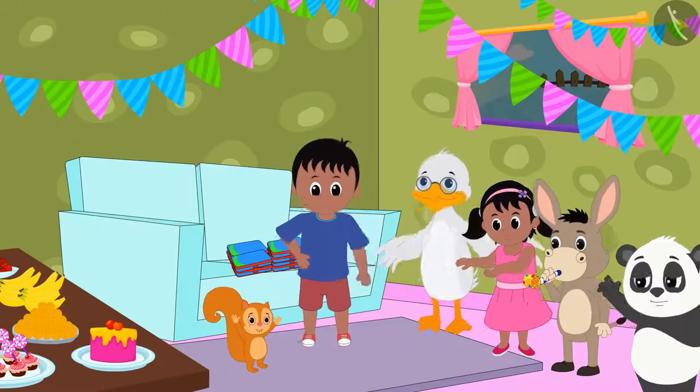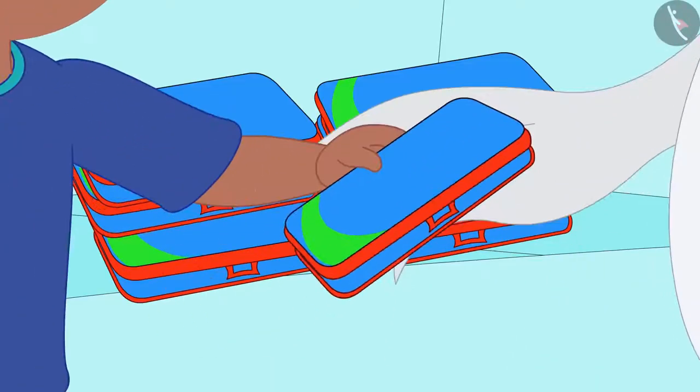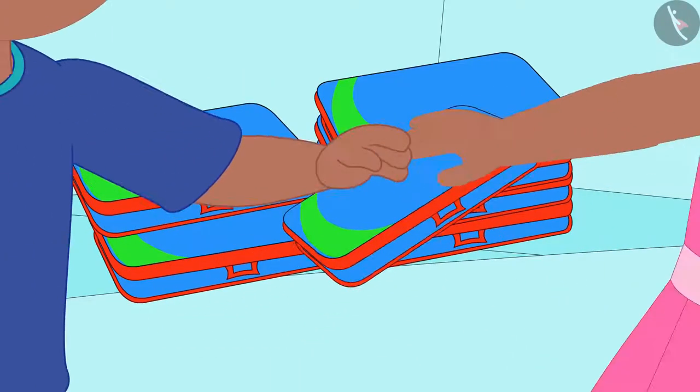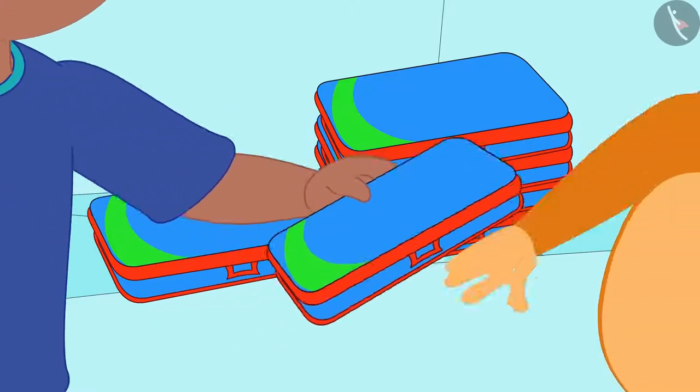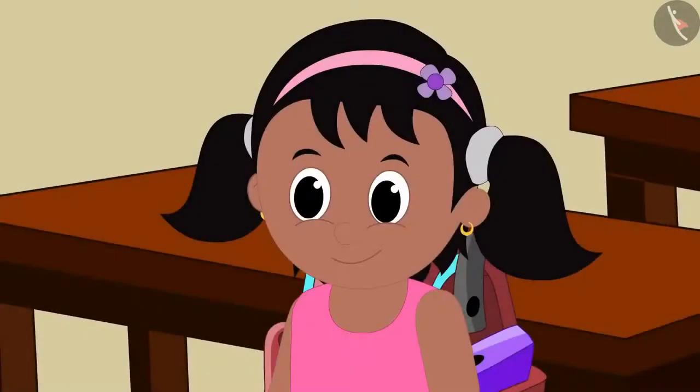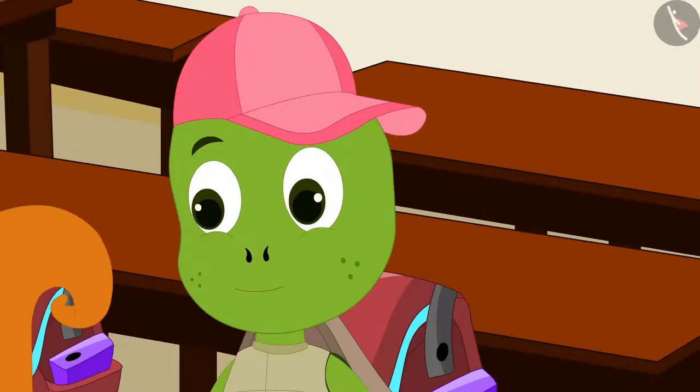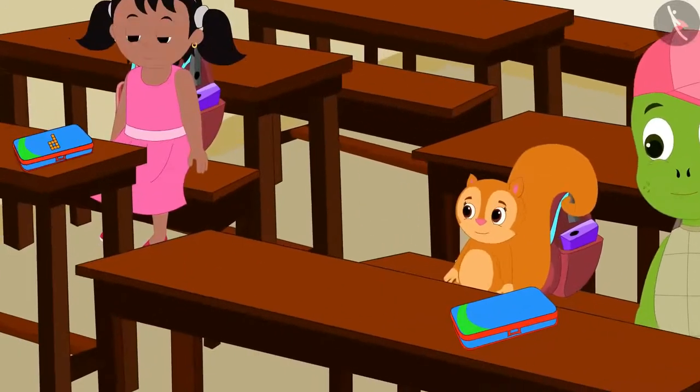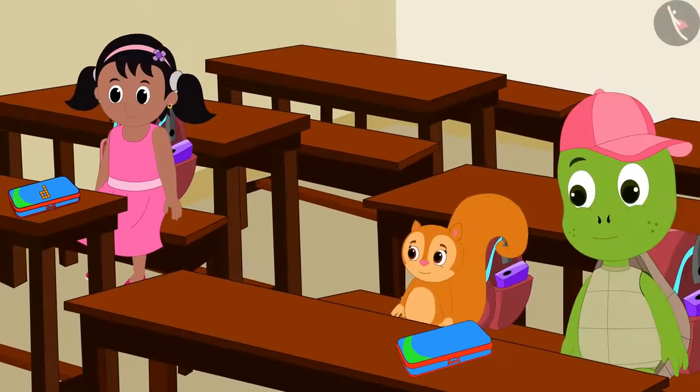At Raju's birthday party, Raju gave compass boxes of the same design to all the children. The next day, Pinky, Chanda and Tufan get excited and bring their new compass box to school.